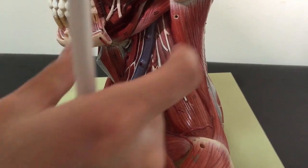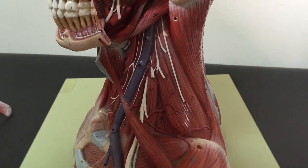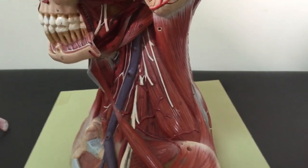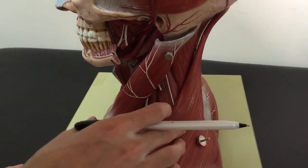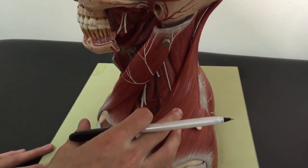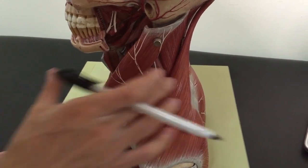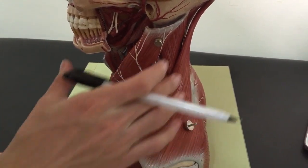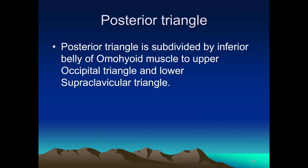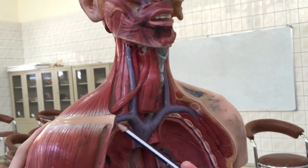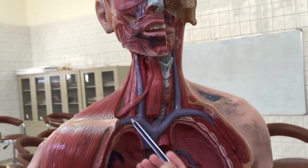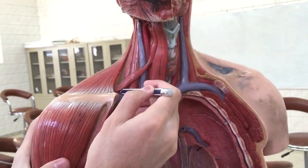The roof of the posterior triangle of the neck is formed by the investing layer of deep cervical fascia and the skin. Also visible here is the scalenus anterior, positioned between the subclavian vein and subclavian artery.